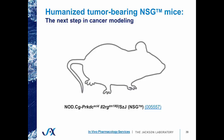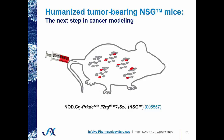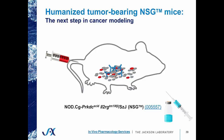While that publication came out, we were in the midst of validating this model ourselves. In our approach, we take an NSG mouse, inject it via tail vein with human hematopoietic stem cells, which home to the bone marrow and engraft and differentiate into all major immune cell types of the blood. You can then engraft a tumor, that tumor will grow, and this serves as the perfect platform for testing anti-cancer drugs — in this case, a monoclonal antibody that targets the tumor and mobilizes the human immune system to mediate anti-tumor immunity.